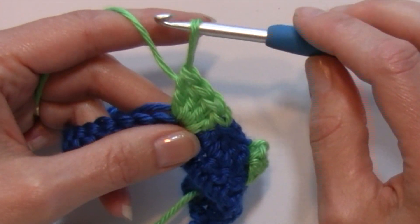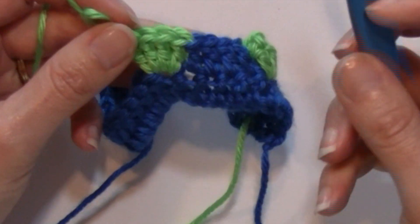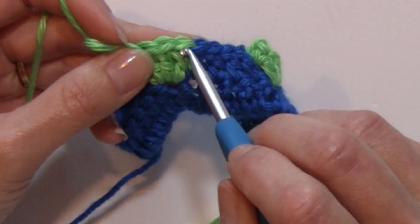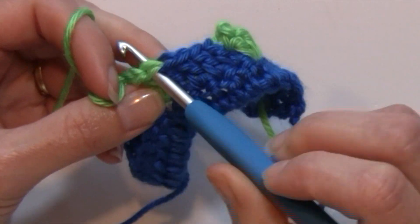Take my hook out of that loop, insert it into the top of that first double crochet that I made, insert it back into that loop.